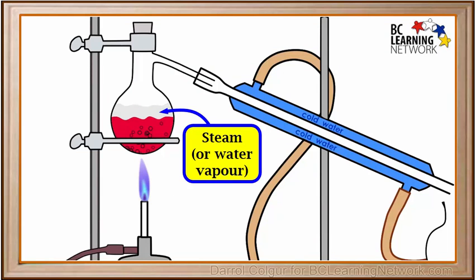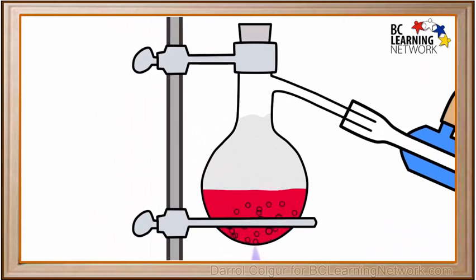Water vapor is actually invisible, but we'll show it as gray here, just so we can see it. As the water in the mixture boils, the flask fills up with steam, or water vapor.